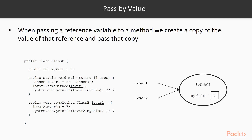We have said in previous videos that in Java everything is an object. It is also true to say that in Java everything is a reference. When we pass primitive variables, we copy those variables. However, when we pass reference variables among methods, we share those references. Methods share references in Java.